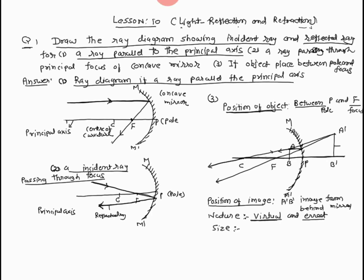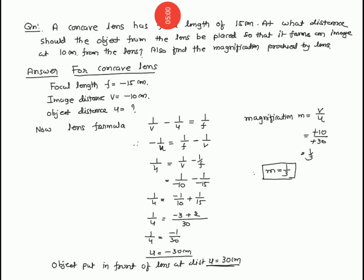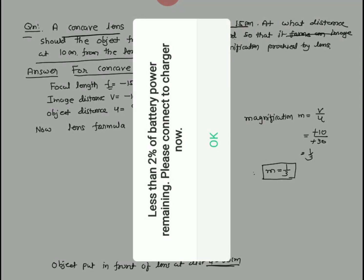This object is the object, this is the image. We can see that the image is big and large. Now we will start with the numerical question. The question is: concave lens has focal length 15 cm. We know that for a concave lens, with the help of the sign convention, focal length is always negative. At what distance should the object from the lens be placed so that it forms an image at 10 cm distance from the lens? Image distance is always negative — it forms at 10 cm.